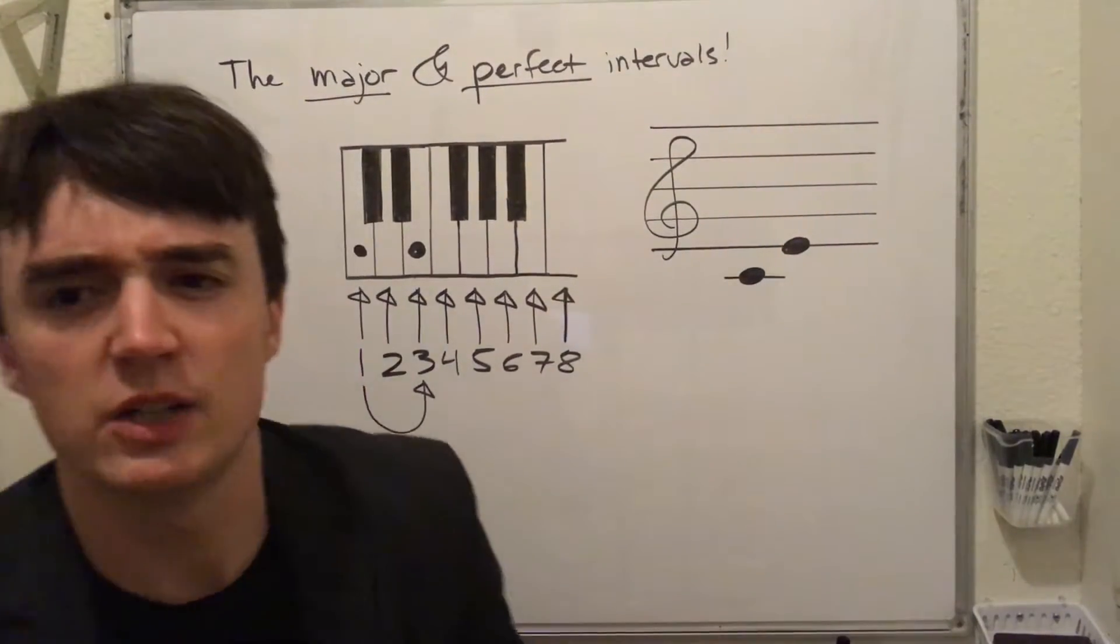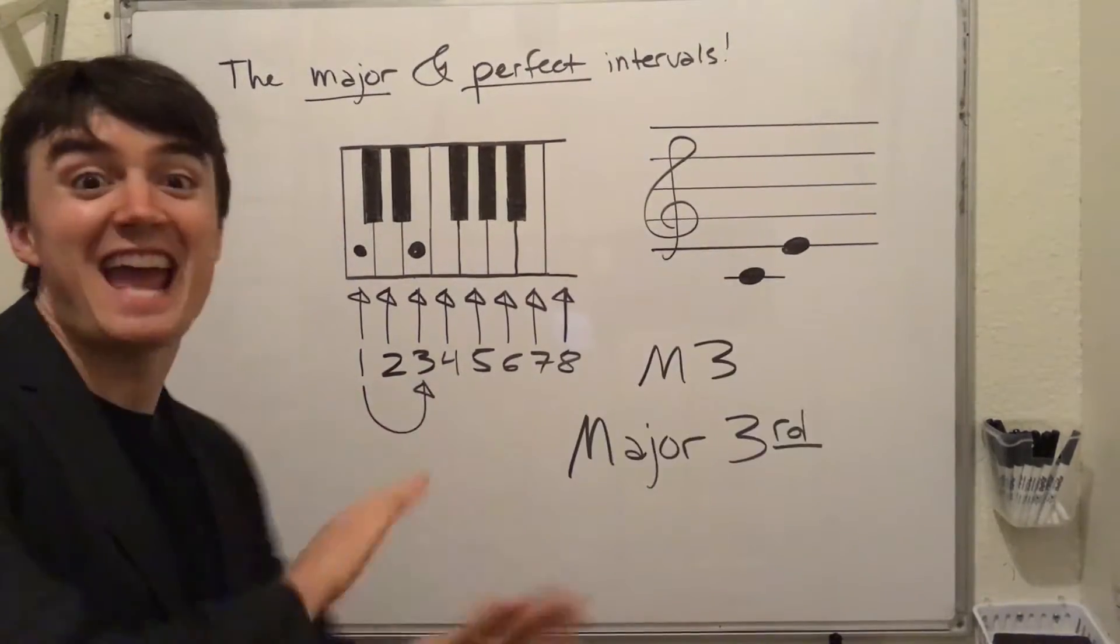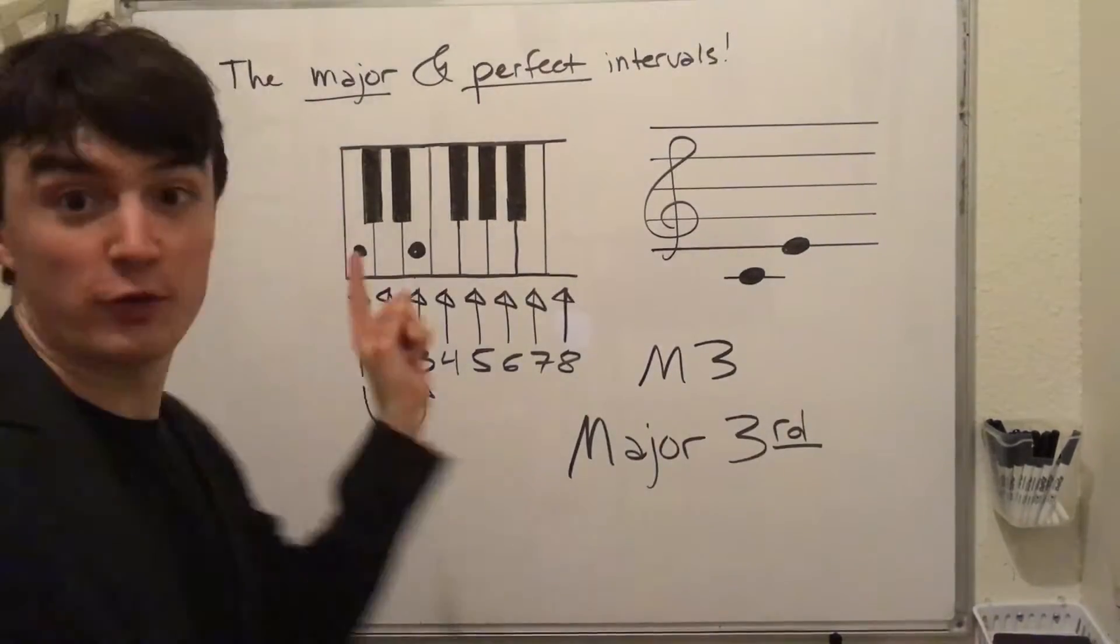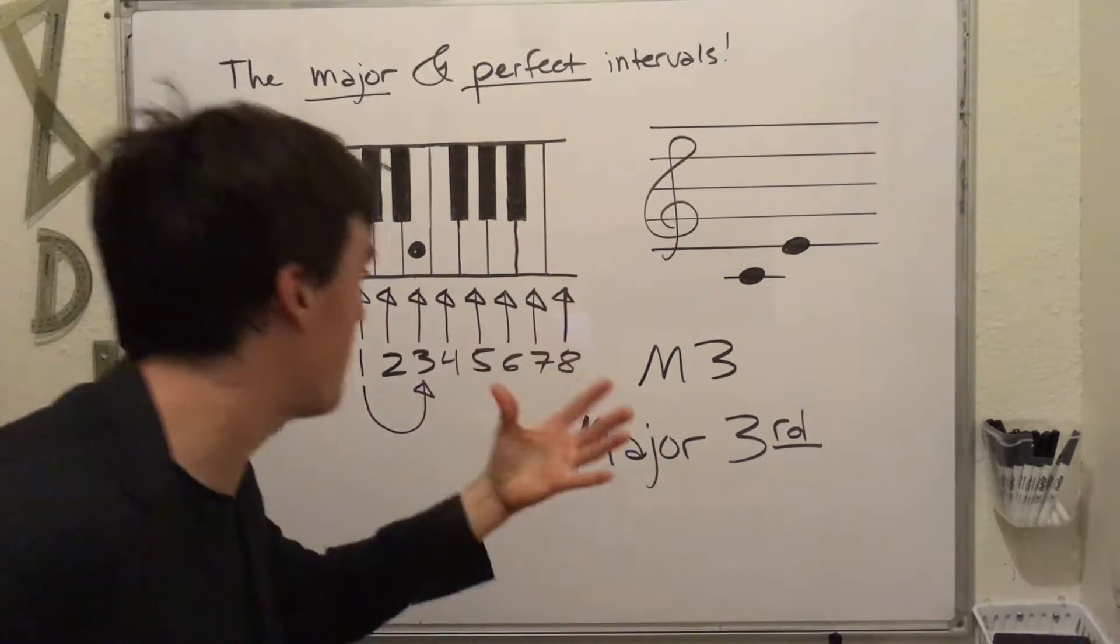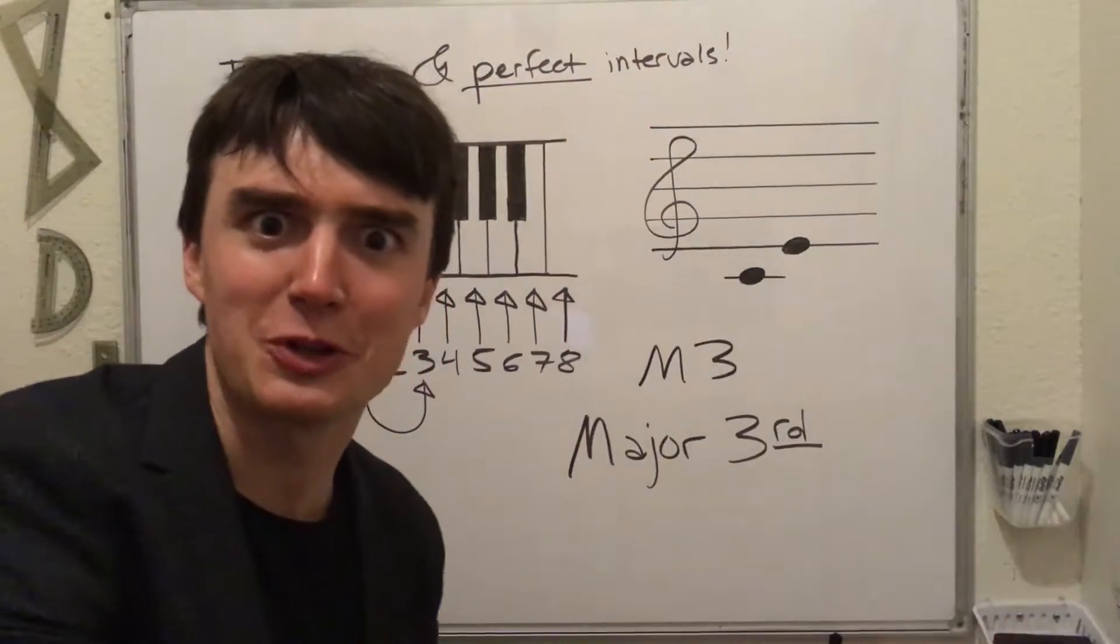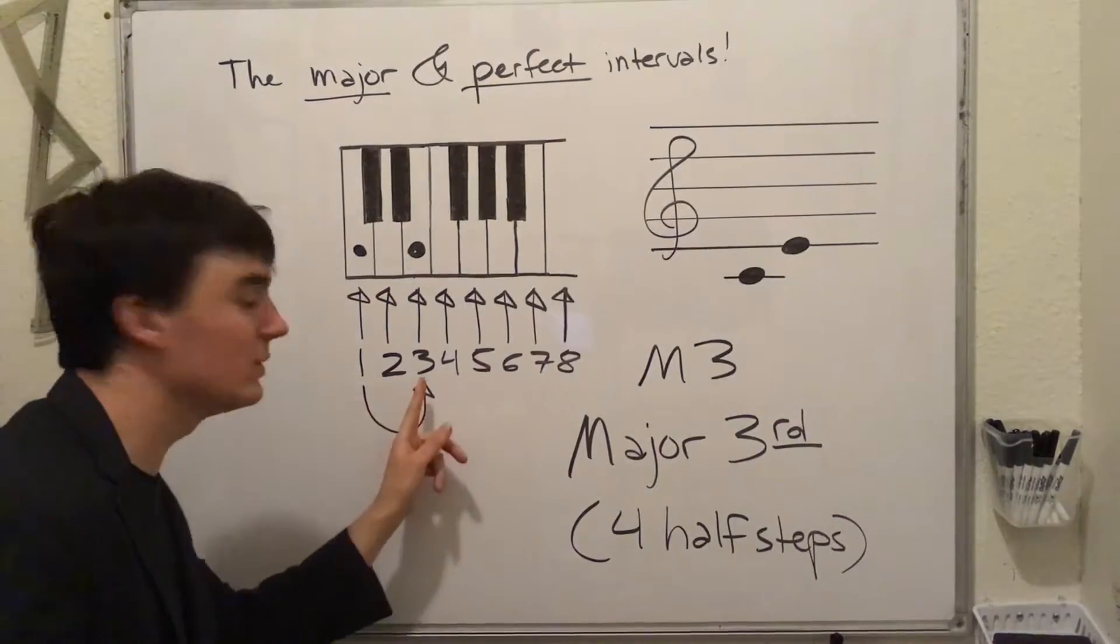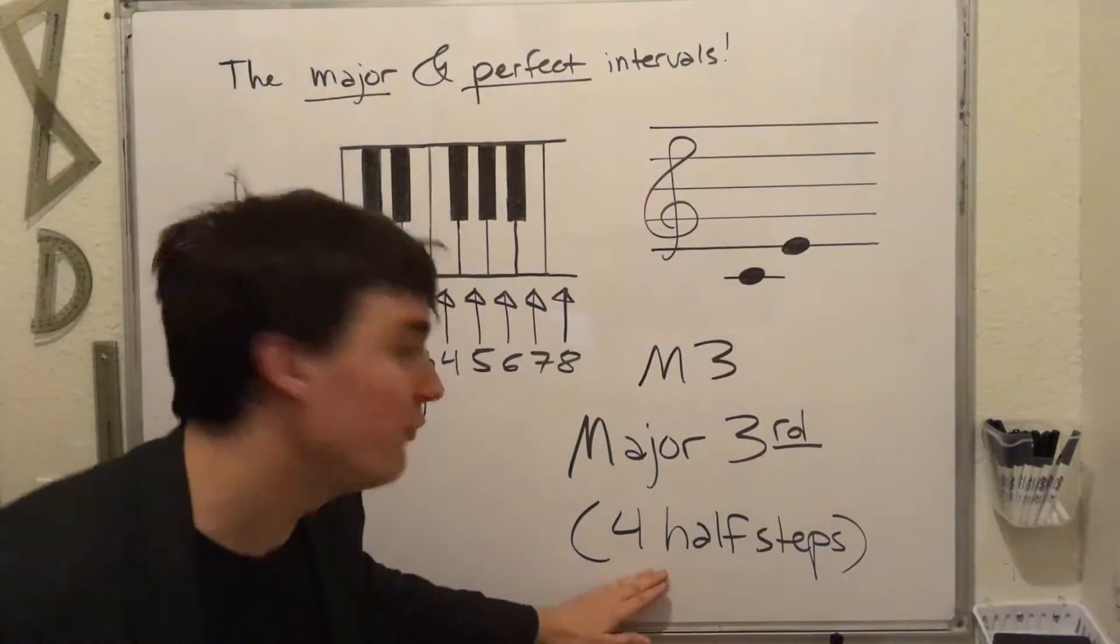So let's say we jump from scale degree 1 to scale degree 3. In any major scale, if you go from 1 to 3, it's a major third. Major scale, major third, and we already know that it's two whole steps. Whole, whole, which is also equal to four half steps.